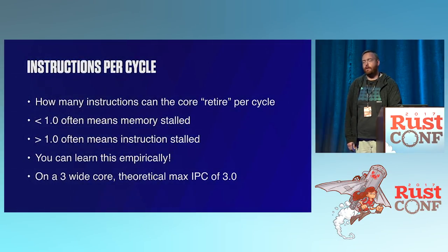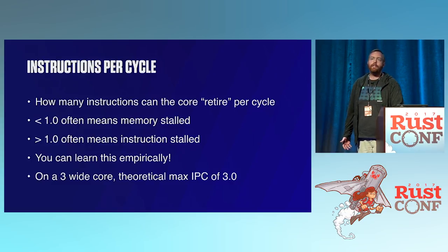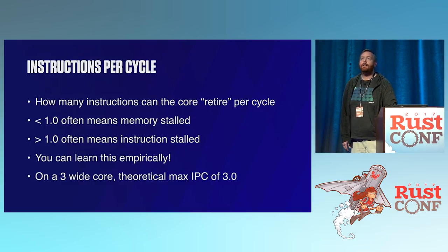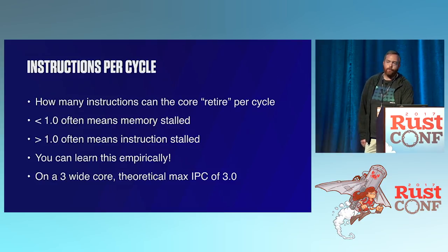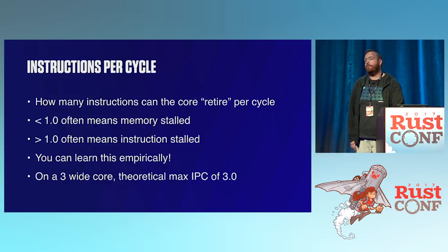If you find a handful of counters that are useful, you can use them to derive metrics for your program, and instructions per cycle is one we use. IPC is how many instructions a core can retire in a cycle — retire meaning the useful work is done. A good rule of thumb: if your IPC score is less than one, your program is memory stalled; if it's greater than one, you're instruction-bound and may need to run fewer instructions. For your machine you can learn this empirically — write one program that does nothing but DRAM fetches, write another that works entirely from registers, and see where your thresholds land.